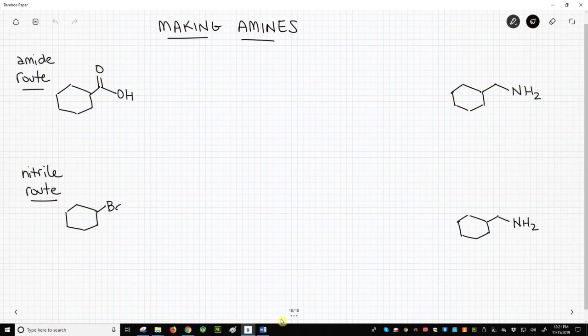The amine has the same number of carbons as the starting carboxylic acid, so we don't need to worry about introducing more carbons. For this synthesis, we'll convert the carboxylic acid to an amide and then reduce the amide.